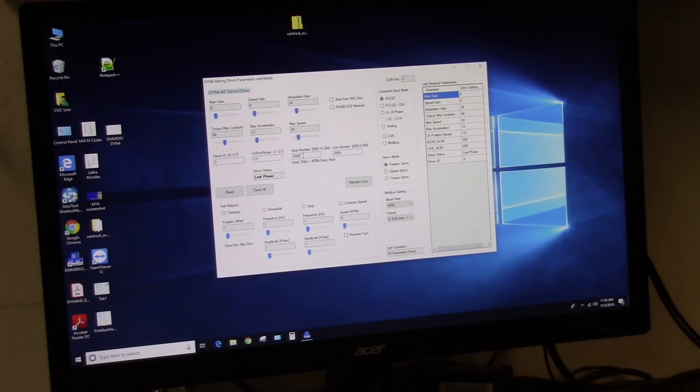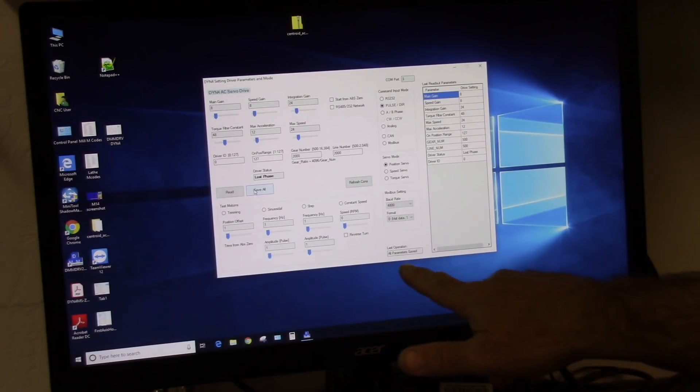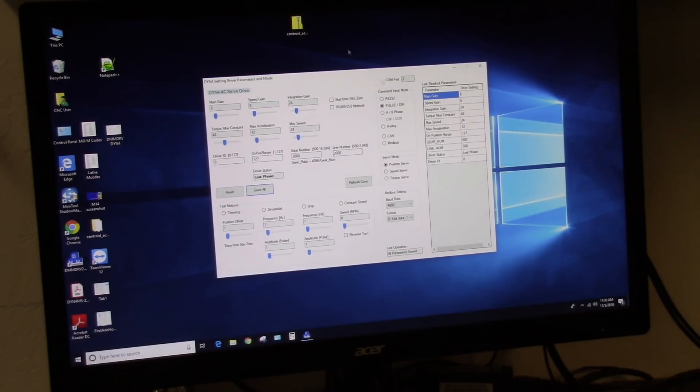And what that does is once you set this up and then in Acorn will set that, it will take 8,000 counts to turn the motor one revolution. And then we go up here to pulse dir, which is step and direction mode. Click on that. And then we go over here to save all. Saving parameters. All parameters saved. And that's it. That's all I'm going to do. So this way it will respond to step and direction. And gear number is 2000. I'll set Acorn counts per rev to 8,000, and we should have movement.